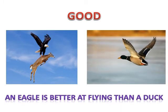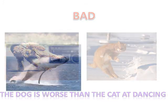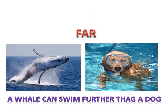We have some irregular cases. Look at 'good': an eagle is better at flight than a duck. For 'bad': the dog is worse than the cat at dancing. And 'far': a whale can swim further than a duck.